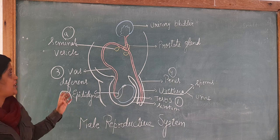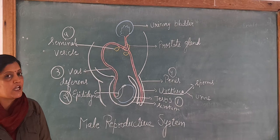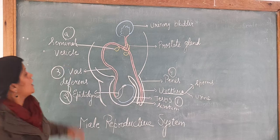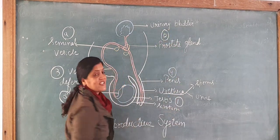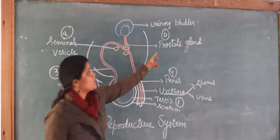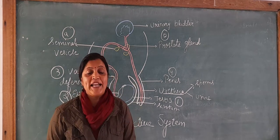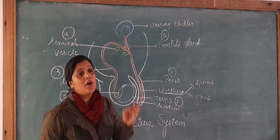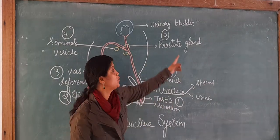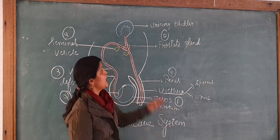The function of the seminal vesicle fluid is to activate and nourish the sperms. The second accessory gland is the prostate gland. This prostate gland also secretes a fluid. This fluid gives mobility — movement — to the sperms, allowing them to move.